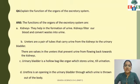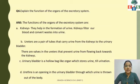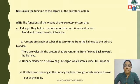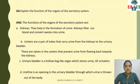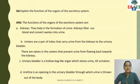The next organ after the kidney is the ureters. Ureters are a pair of tubes that carry urine from the kidney to the urinary bladder. There are valves present in the ureters which prevent the backward flow of urine — meaning the urine flows only in one direction, it is unidirectional. The urinary bladder is a hollow bag-like structure and its main function is to store urine.